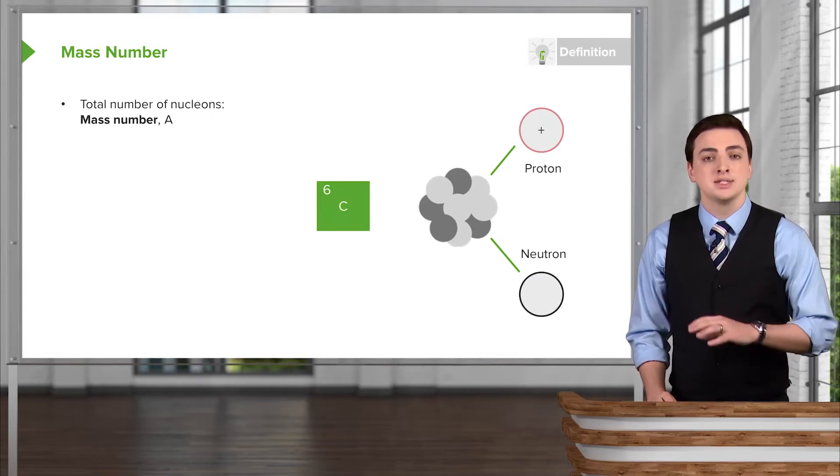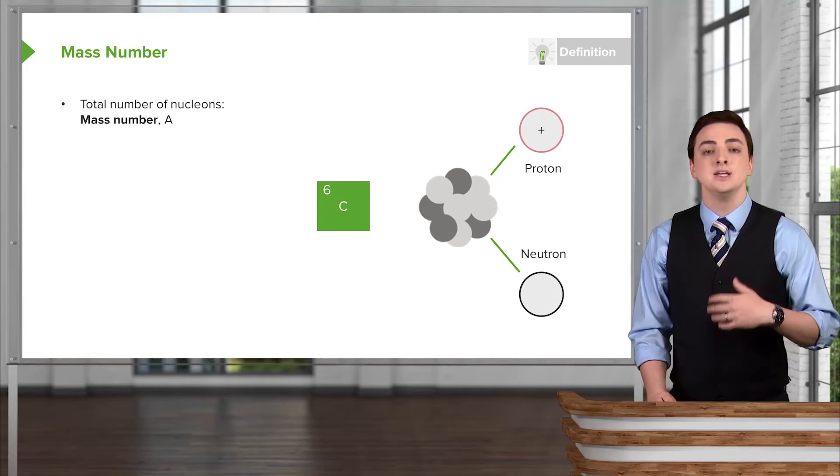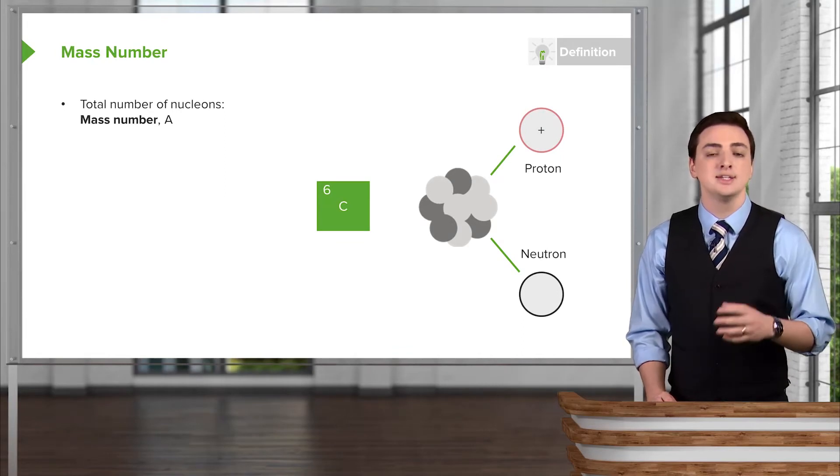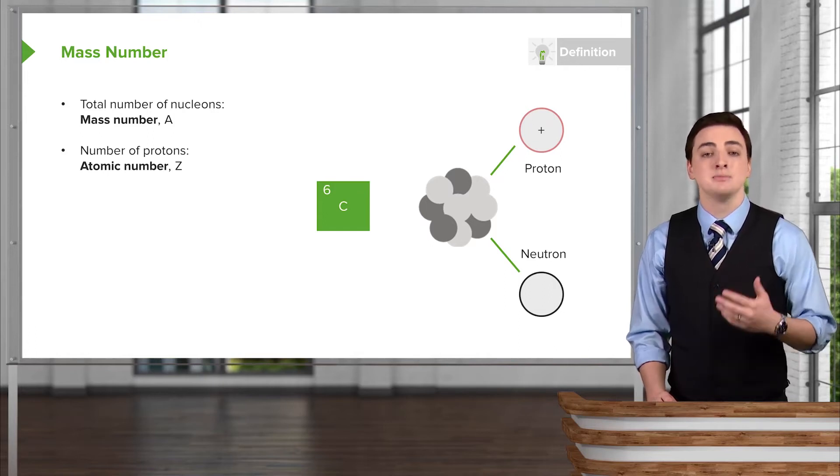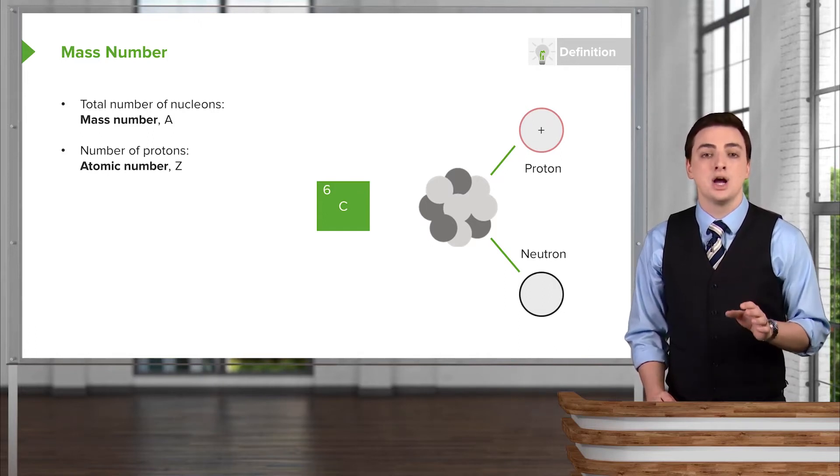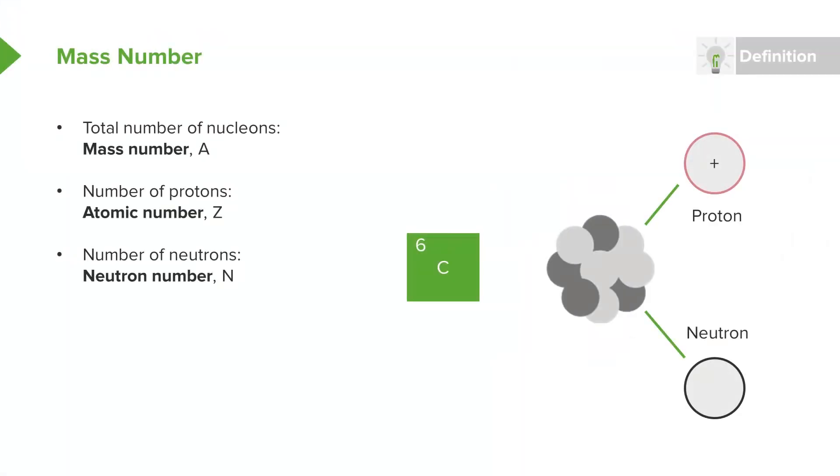We can define a few more properties and sort of relate them all to each other. The mass number is the total number of nucleons. This includes both protons and neutrons. The atomic number defines the atom itself, and this is the number of protons. We refer to this as Z. The number of neutrons is called the neutron number. We refer to it as N. And then as we just discussed, the total mass number, which is the total number of nucleons, A, will simply be the sum of all the protons and all the neutrons, Z plus N.